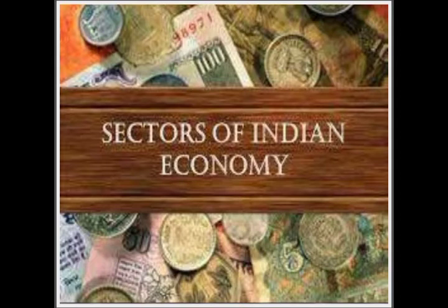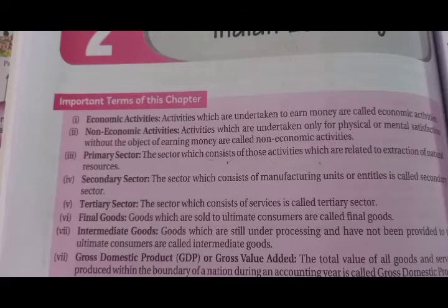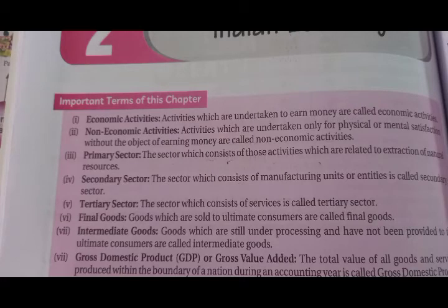Who will perform the earning source activities? It is the human beings. So first we discuss: what is the meaning of human activity? Those activities done by human beings are called human activity. Human activity can be divided into two parts: economic activity and non-economic activity.